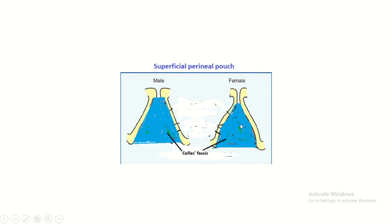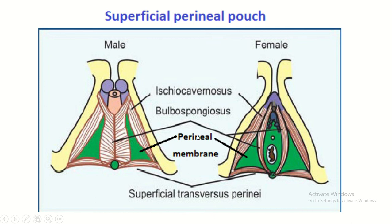After removing the skin, we find Colles' fascia in both male and female. When we remove Colles' fascia in the male, we find two bulbospongiosus muscles covering the bulb of the penis, two ischiocavernosus muscles covering the crura of the penis, two superficial transverse perineal muscles, the perineal body, and a portion of the perineal membrane.